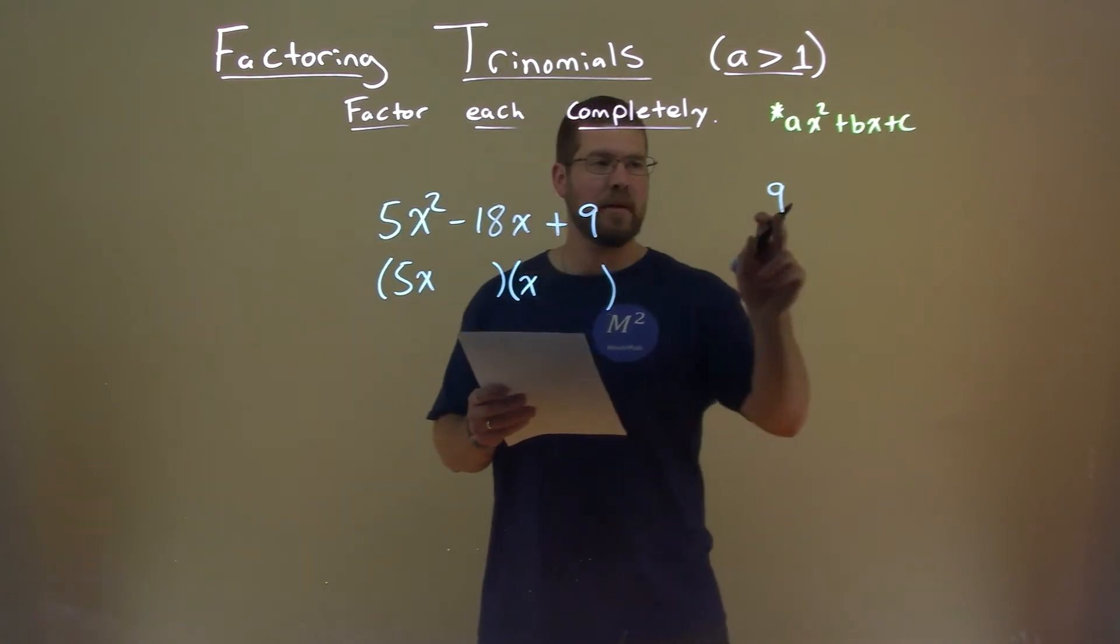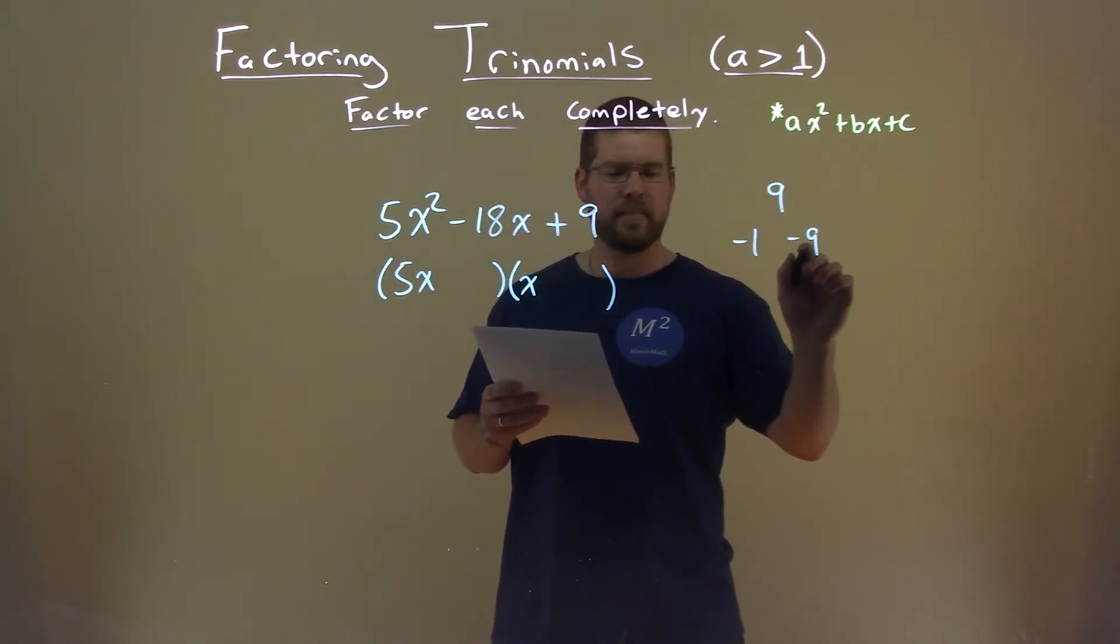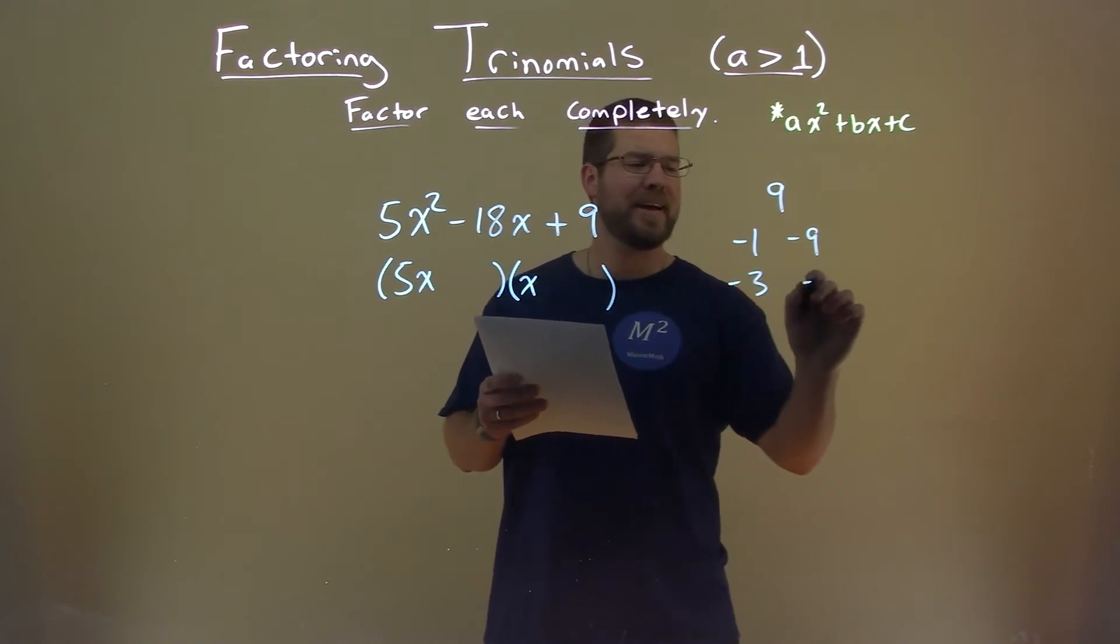So what two numbers multiply to be 9, but they're both negative? That's negative 1 and negative 9, or negative 3 and negative 3.